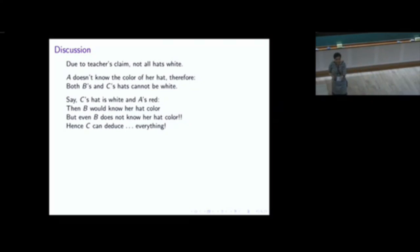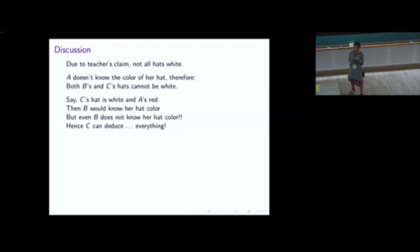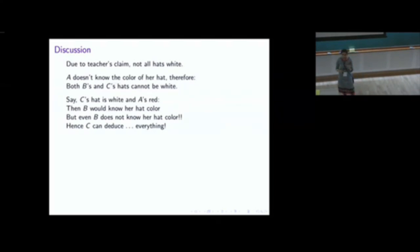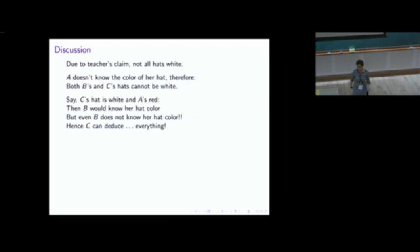Now let's look at the mathematical angle underneath this puzzle. This is typically the very first puzzle people study when they study something called epistemic logic — a logic used to deduce knowledge or perceptions. It is a well-studied area. I will look at this puzzle through the lens of epistemic logic.